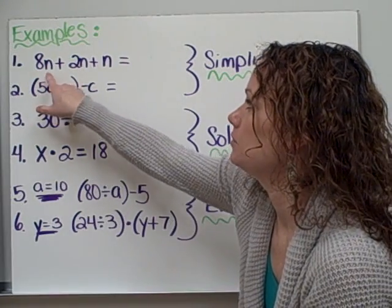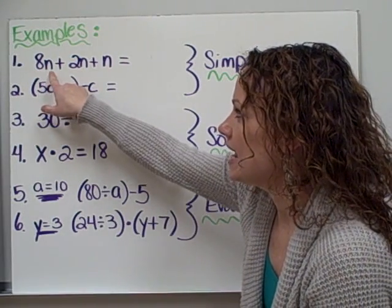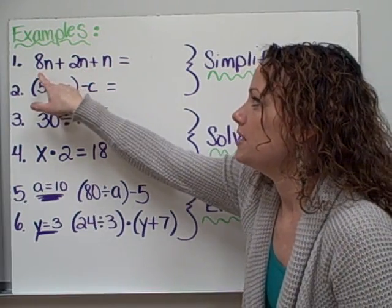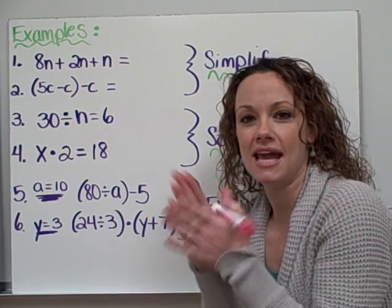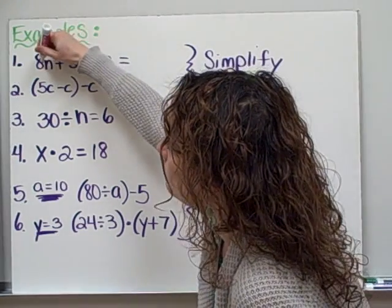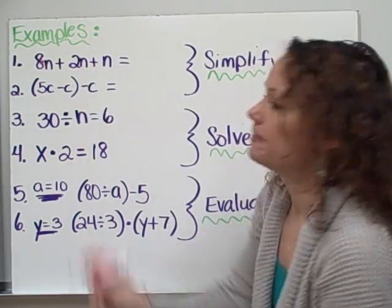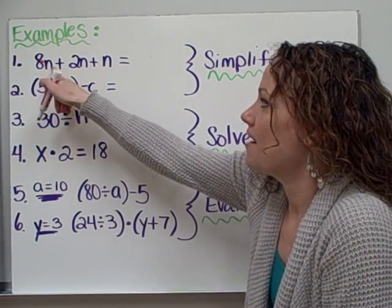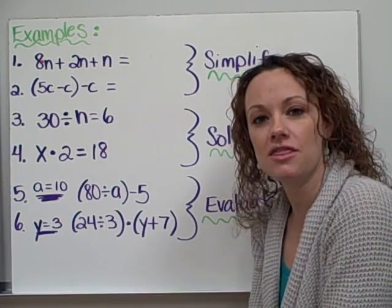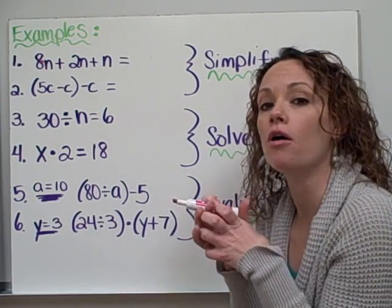So I want you to take a look at example number 1. We have 8n plus 2n plus n. Now we know whenever we put numbers and letters together, when we smack them together, that is just like having a little multiplication sign in the middle of them. And anytime you have the same letter, you can actually combine those terms all together.